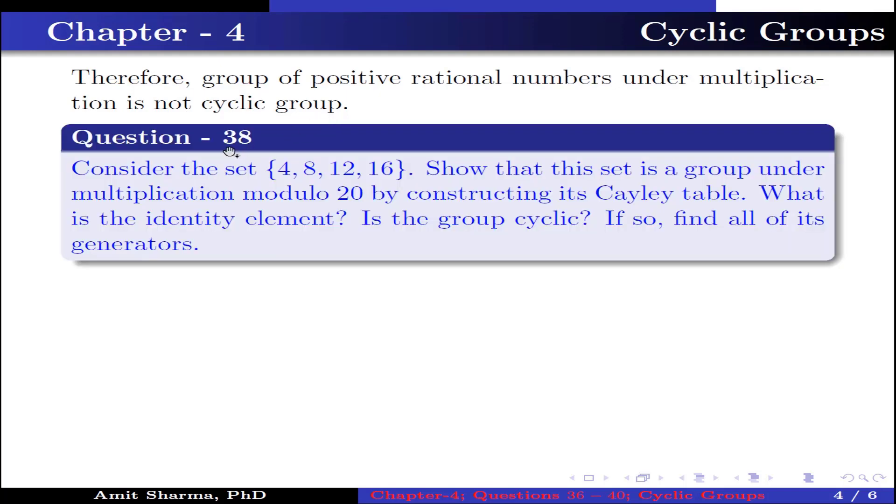Question number 38: Consider the set containing the elements 4, 8, 12, 16. Show that this set is a group under multiplication modulo 20 by constructing its Cayley table. What is the identity element? Is the group cyclic? If so, find all its generators.